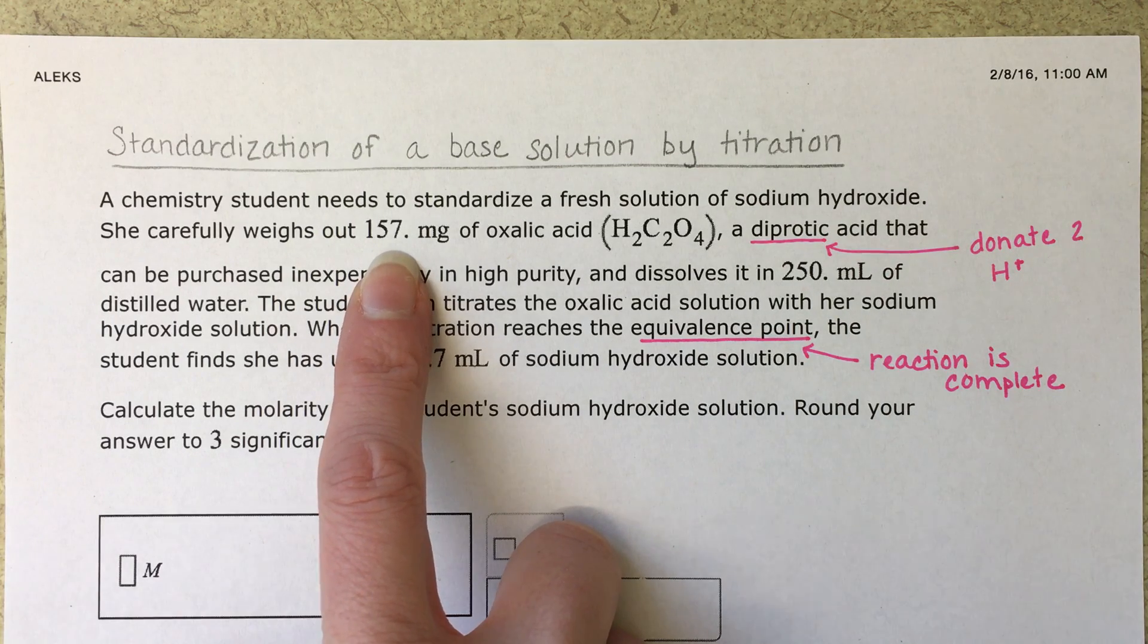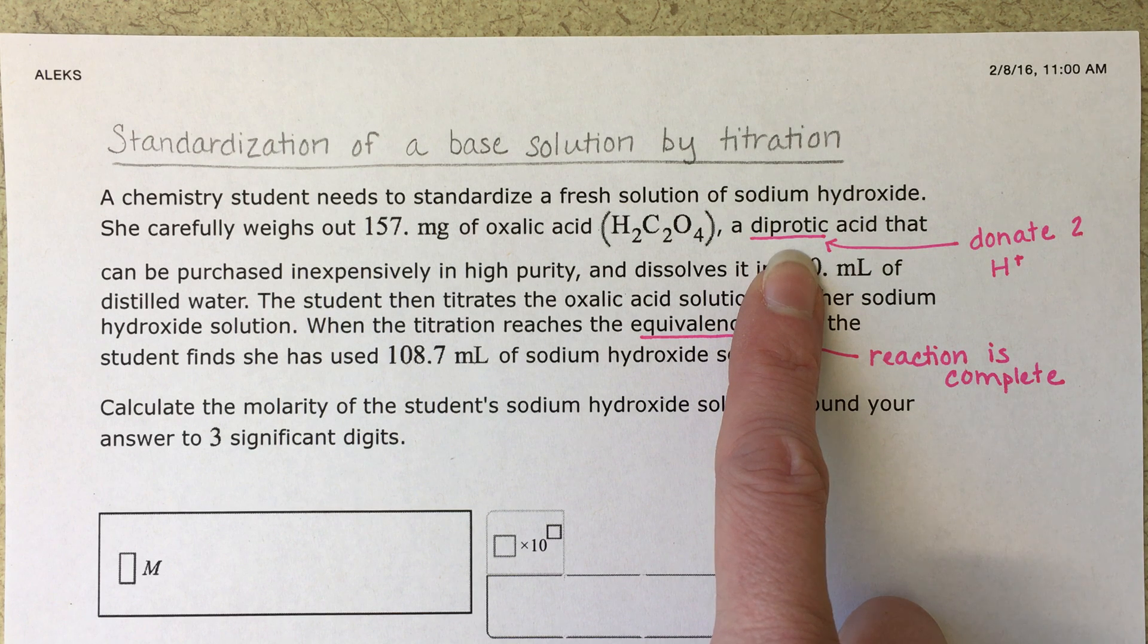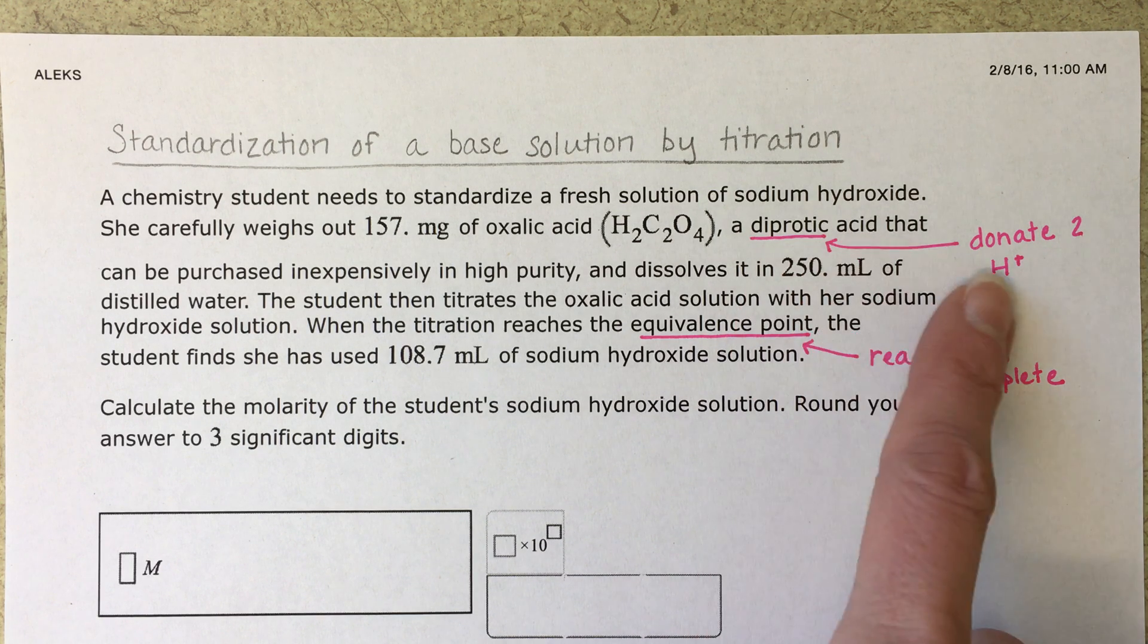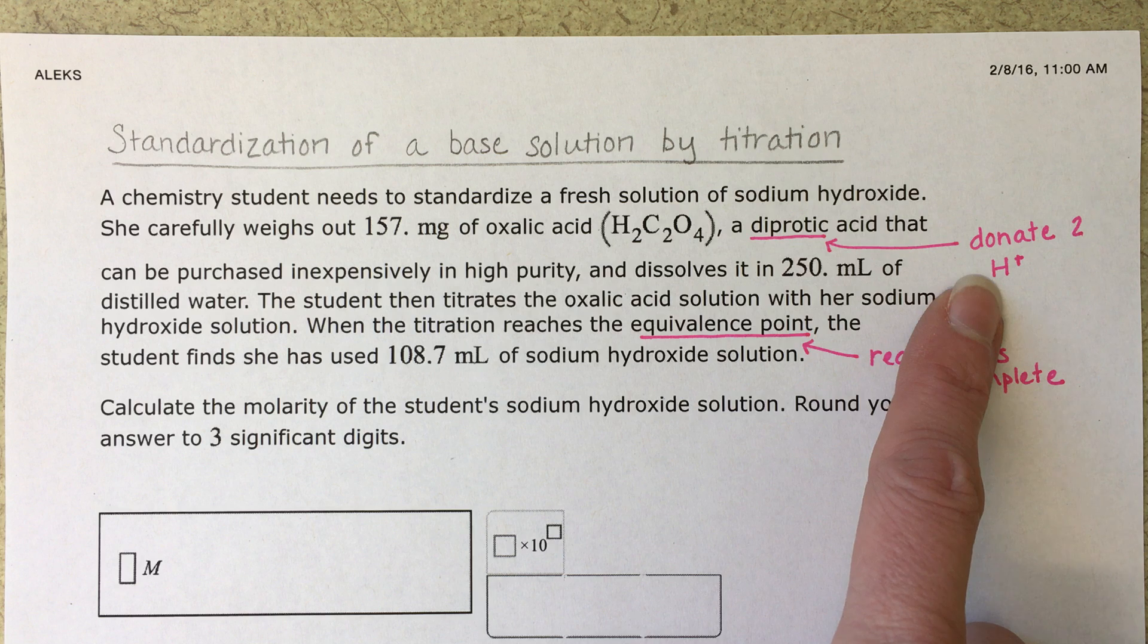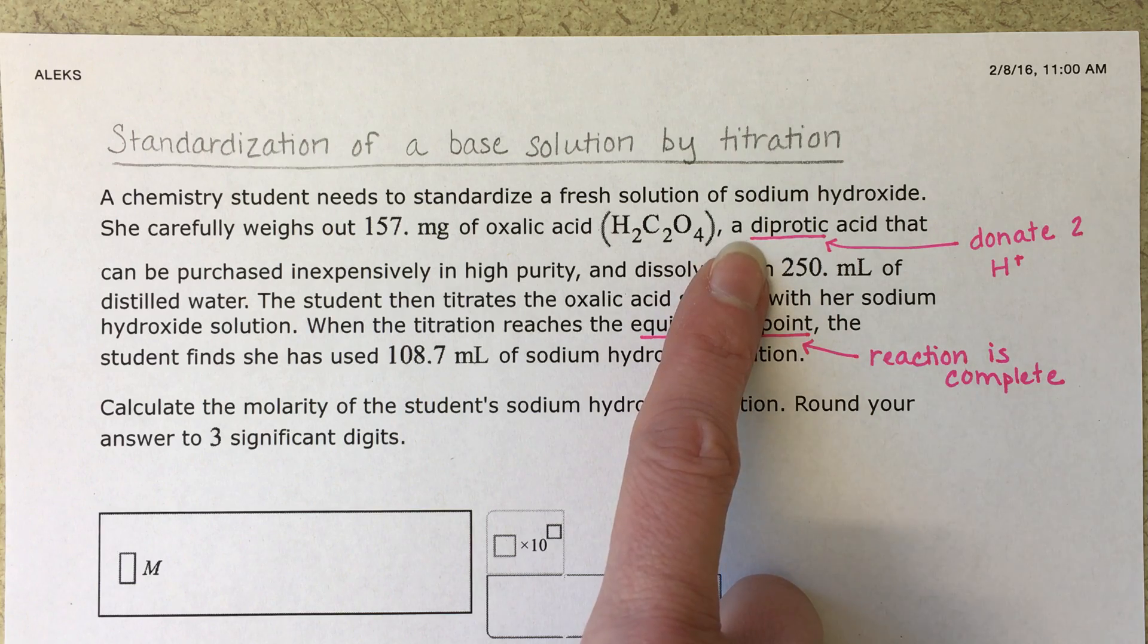We weigh out 0.157 milligrams of oxalic acid. The problem tells us that this is a diprotic acid, which means that in the acid-base reaction this molecule is going to donate two H pluses, di being the prefix for two.